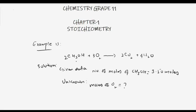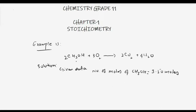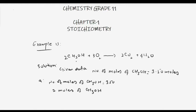The unknowns are the moles of oxygen used and the moles of water produced. To solve part (a), the number of moles of methanol is 3.50. From the balanced chemical equation, 2 moles of methanol react with 3 moles of oxygen.